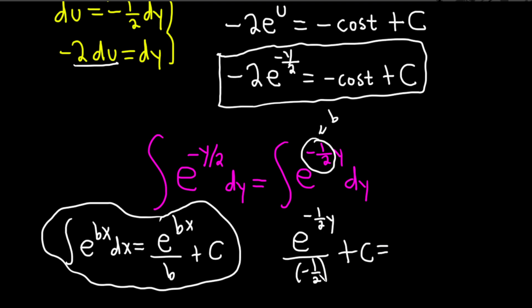So that's, well when you divide by negative 1 half you really multiply by the reciprocal which is negative 2 over 1. So this is just negative 2 e to the negative 1 half y plus our constant of integration capital C.